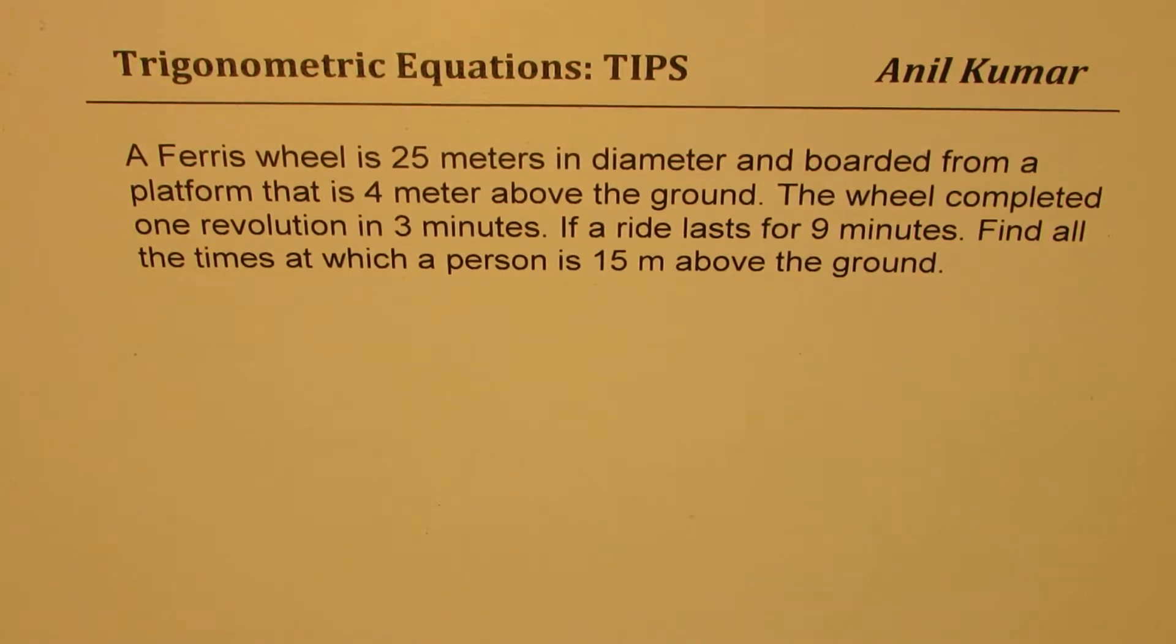The question here is: a Ferris wheel is 25 meters in diameter and boarded from a platform that is 4 meters above the ground. The wheel completes one revolution in 3 minutes. If a ride lasts for 9 minutes, find all the times at which a person is 15 meters above the ground.